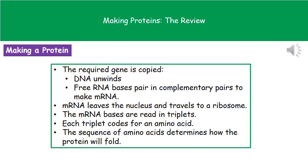The first thing that has to happen is that we need our DNA unwound, because DNA occurs as a double helix. The required gene — the DNA unwinds. Once the DNA is unwound, free RNA bases come up and pair onto their complementary pairs to make mRNA. The mRNA is then able to leave the nucleus and travel to a structure called a ribosome, found in the cytoplasm of our cell.